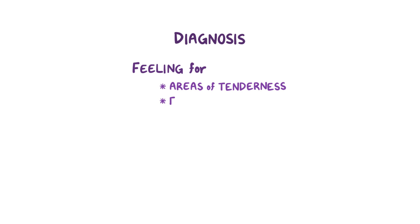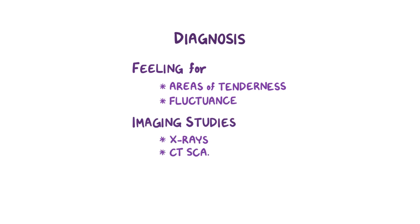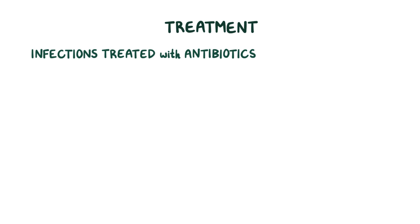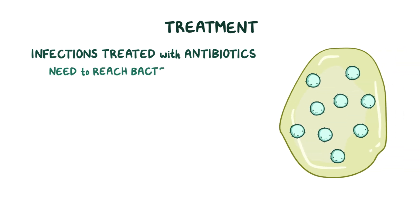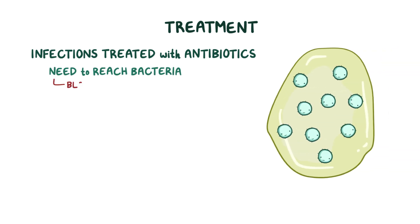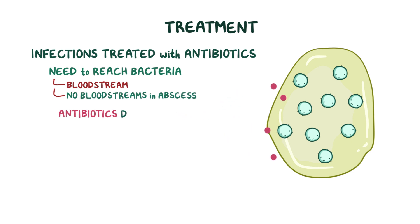Diagnosing a dental abscess is usually done by feeling for areas of tenderness and fluctuance, and imaging studies like X-rays or a CT scan can determine the exact location and size. Infections are generally treated with antibiotics, but for antibiotics to work they need to reach the bacteria through the bloodstream. Since abscesses don't have blood vessels inside them, antibiotics can only diffuse in — which is not very effective, especially for large abscesses.